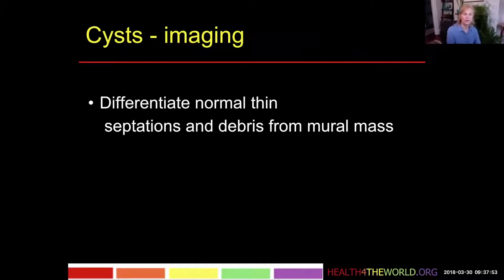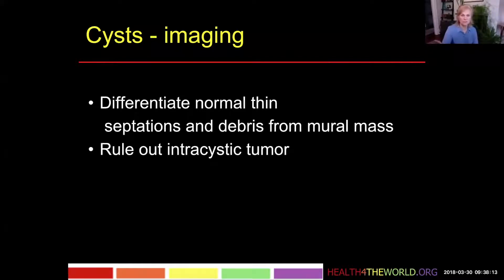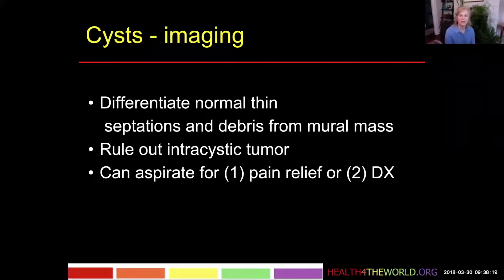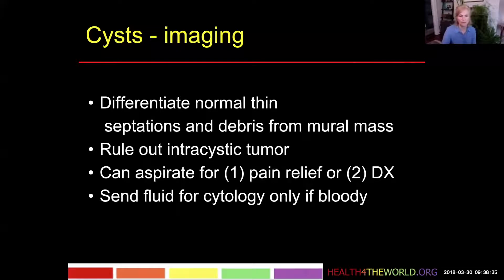The features on imaging are that we want to differentiate normal thin septations, which can occur in simple cysts, from debris and from mural masses. If we see a cystic structure that has what appears to be solid material along the wall or along a septation, that can be suspicious. We want to make sure the patient doesn't have an intracystic tumor. If it all looks simple, we can aspirate the lesion for pain relief or for diagnosis. We don't generally send the fluid for cytology unless it's bloody.